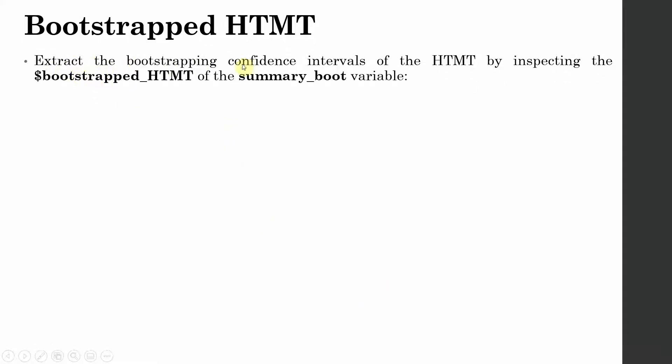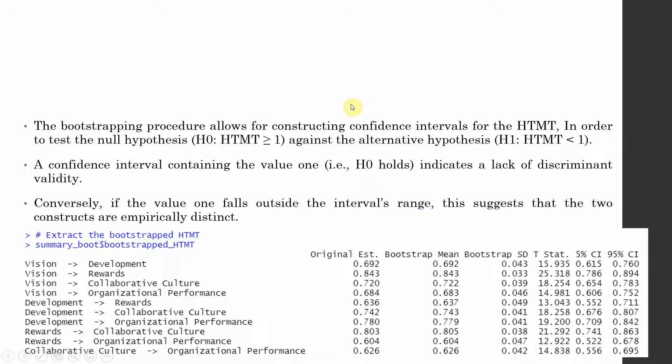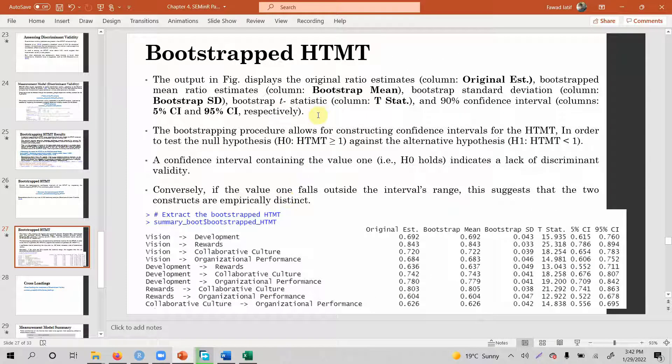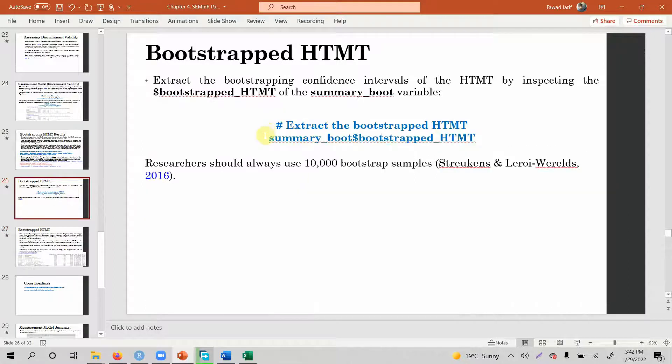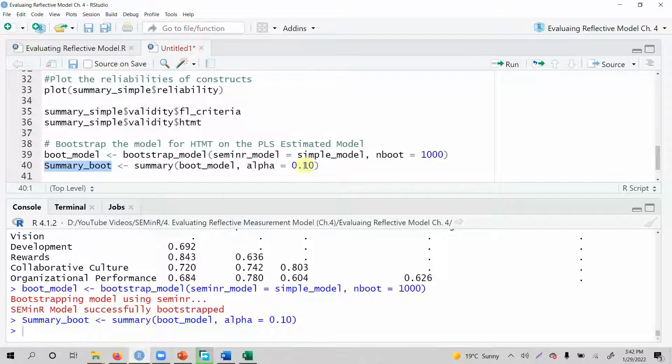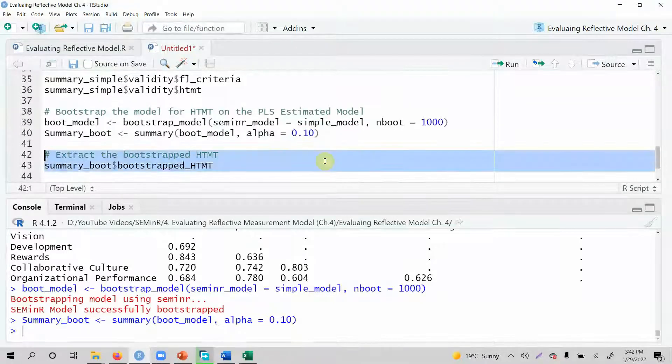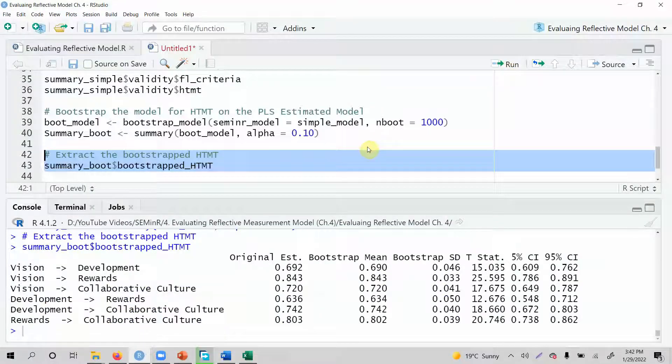We need to extract the bootstrapping confidence intervals of the HTMT by inspecting this particular sub-object from this object. So let's do this. Researchers should always use 10,000 bootstrap samples. But obviously, this is just an example. So let's first get the output and then we are going to interpret it as well. Let's copy this. Let's paste it here. Let's run it to get our output.